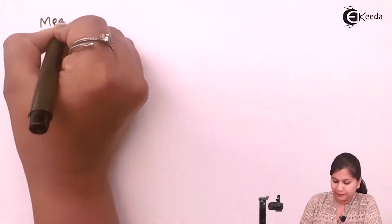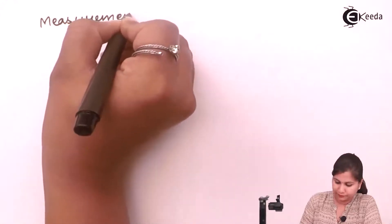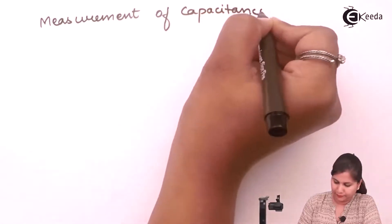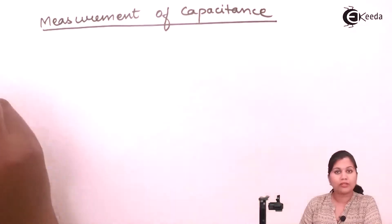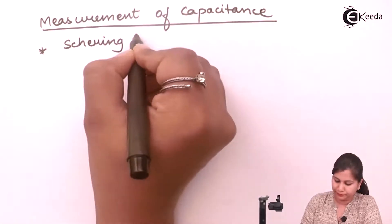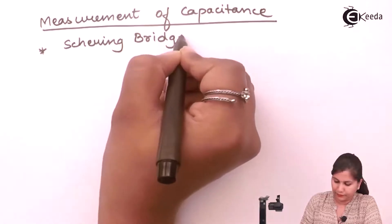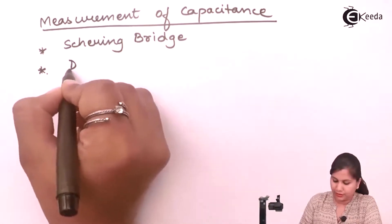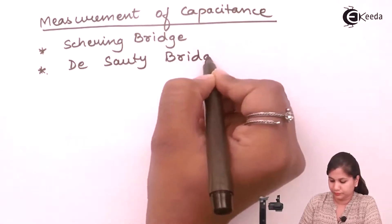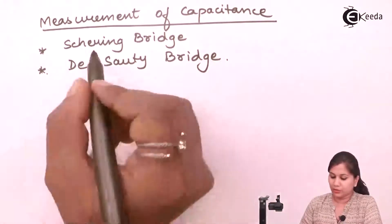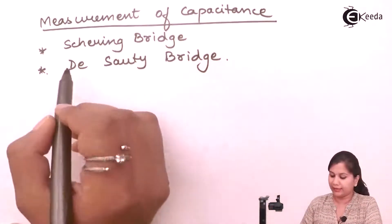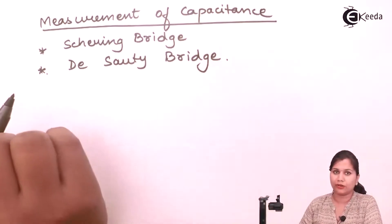For the measurement of capacitance, we have two bridges. First is the Schering bridge, and second is the De Sauty bridge. These two bridges are used for the measurement of capacitance. The Schering bridge was invented by the scientist Schering, and the De Sauty bridge was invented by the scientist De Sauty.